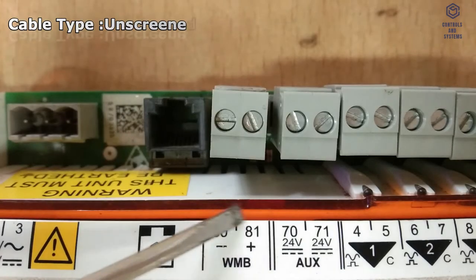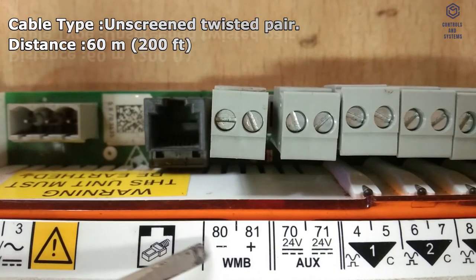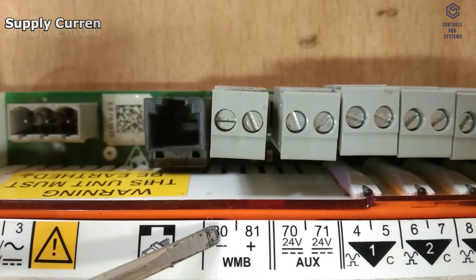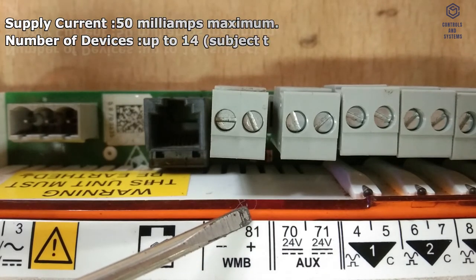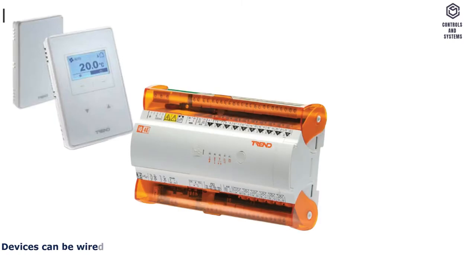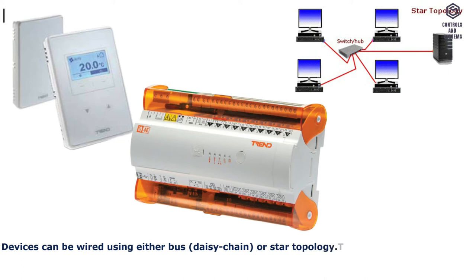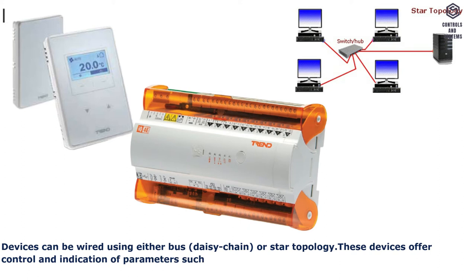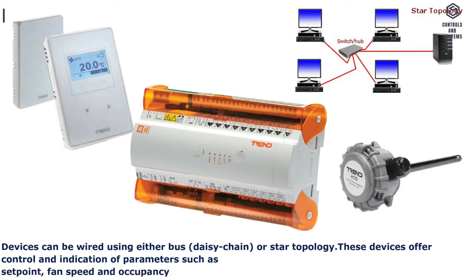The wall bus port facilitates the connection of room display devices. For example, RVWMB series room display devices can be wired using either bus, daisy chain, or star topology. These devices offer control and indication of parameters such as set point, fan speed and occupancy, as well as sensing temperature, humidity and CO2 levels.